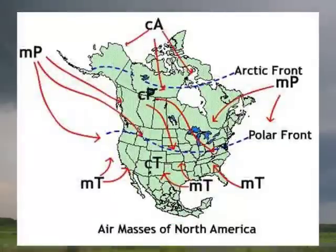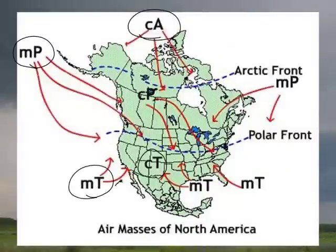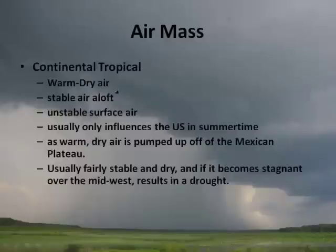Here in the United States, continental tropical air forms over Arizona and gives us super hot temperatures. We also have continental Arctic, maritime polar, and maritime tropical air masses. Maritime tropical is where a lot of hurricanes come from, affecting places like Florida.